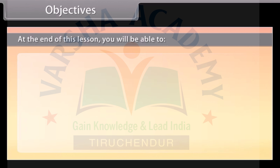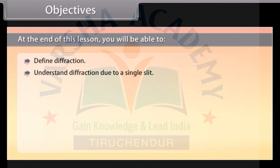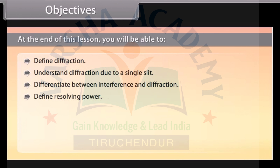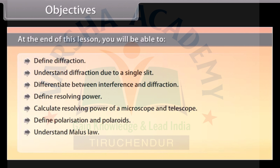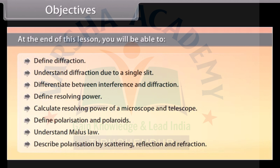At the end of this lesson, you will be able to: define diffraction; understand diffraction due to a single slit; differentiate between interference and diffraction; define resolving power; calculate resolving power of a microscope and telescope; define polarization and polaroids; understand Malus's law; describe polarization by scattering, reflection, and refraction.